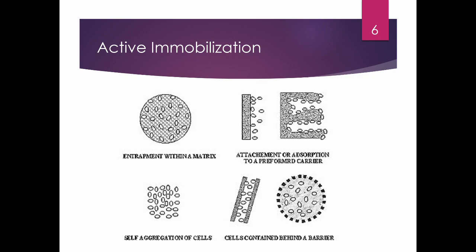These are the different modes of immobilization. For entrapment, you have a matrix or mesh containing the cells, and cells can also produce flocs or aggregates by themselves — communities of cells flocking together. For encapsulation, cells are inside hollow fibers or semi-permeable beads. For attachment or adsorption, cells adhere to the surfaces of a solid support, and the limiting factor here is the surface area. Increasing surface area is one way to improve this.